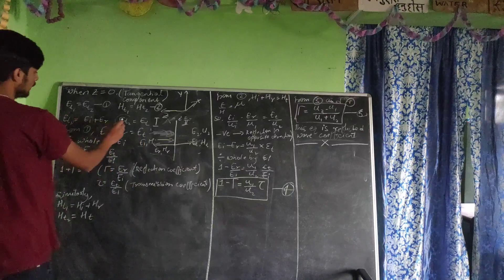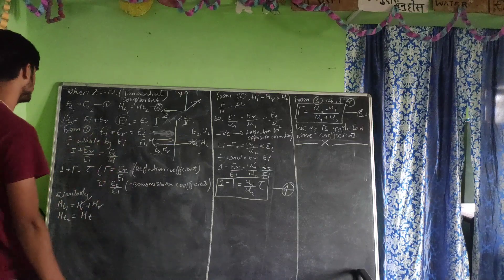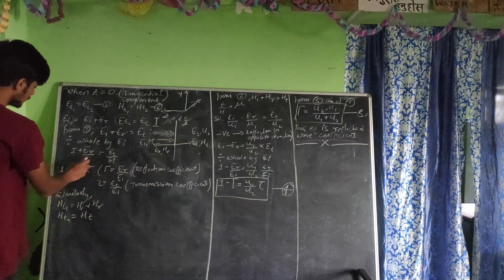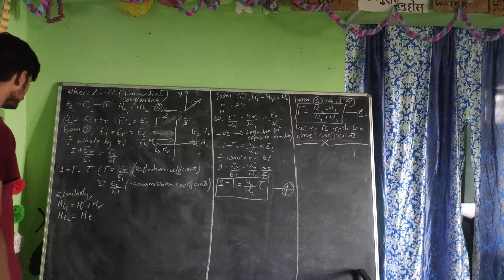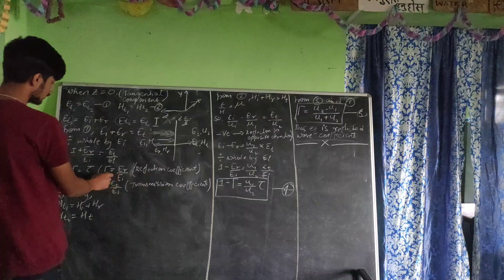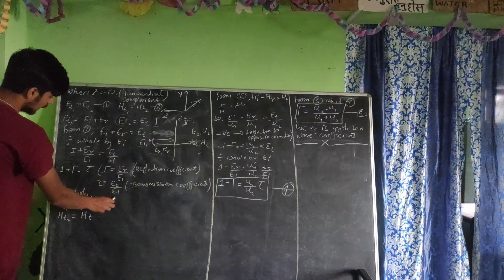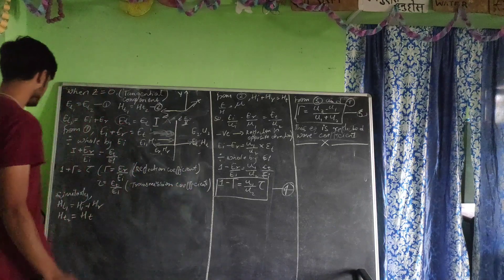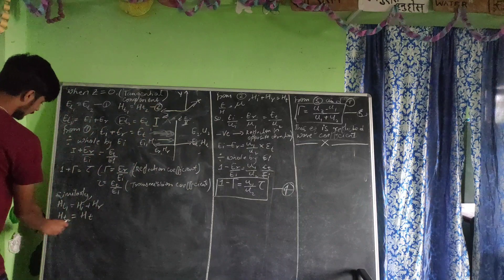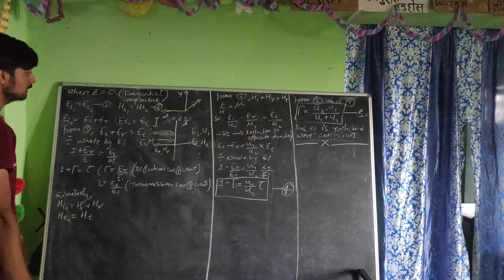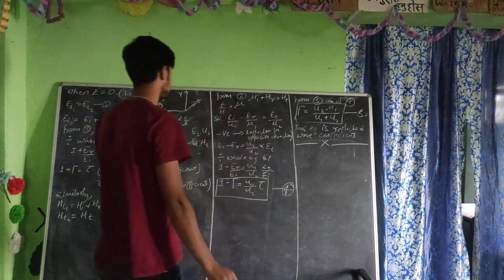From equation one, E_i plus E_r equals E_t. Dividing by E_i, we define: E_r divided by E_i equals gamma, which is the reflection coefficient, and E_t divided by E_i equals tau, which is the transmission coefficient. From equation two, H_T1 equals H_i plus H_r and H_T2 equals H_t. Substituting into equation two gives H_i plus H_r equals H_t.